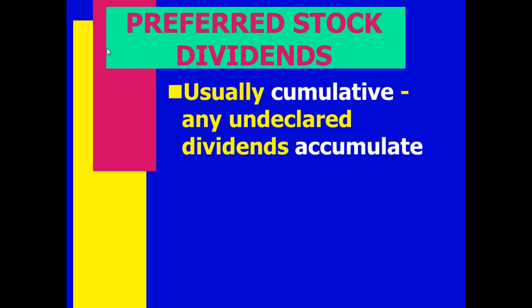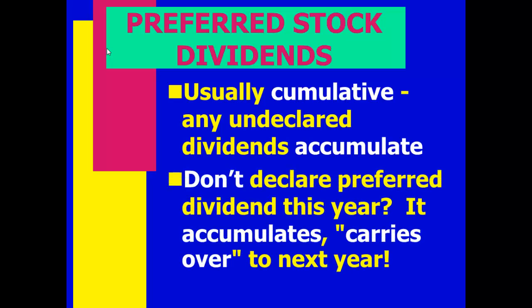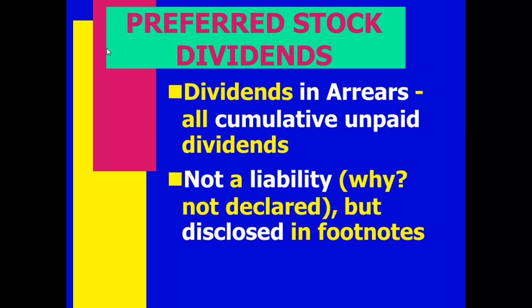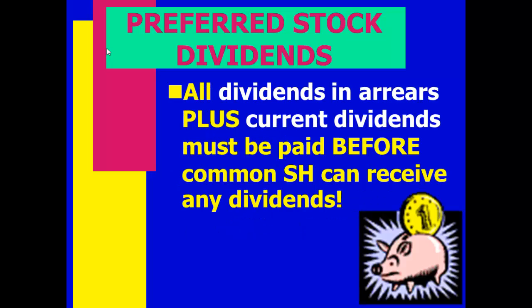Preferred stock is usually cumulative. Cumulative preferred stock means that if I don't declare the dividend one year, it falls into arrears — it's behind. If we don't declare the preferred dividend one year, we still owe that amount; it doesn't go away. Before we can give anything to common stockholders, we have to catch up all dividends in arrears plus pay the current year.